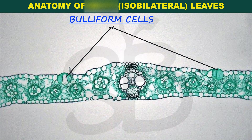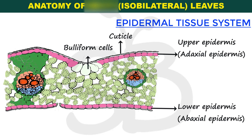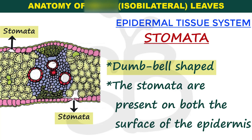We need to identify the bulliform cells clearly. In the monocot leaf section, bulliform cells help distinguish it from the dicot leaf, making it easy to identify. Epidermal appendages are also present. Stomata are also part of the epidermis. The stomata in monocot plants are dumbbell-shaped, which is different from dicot plants.